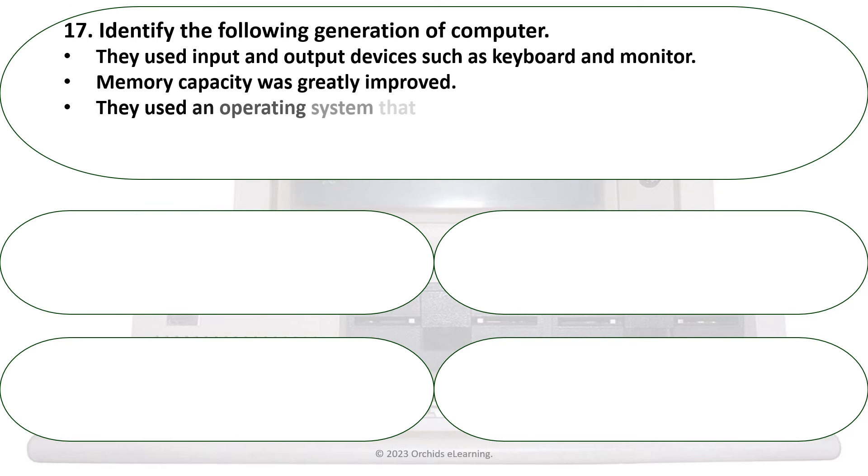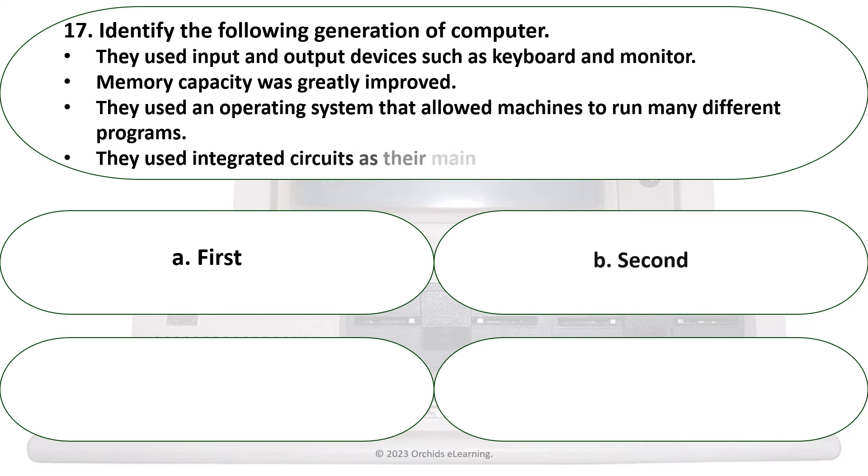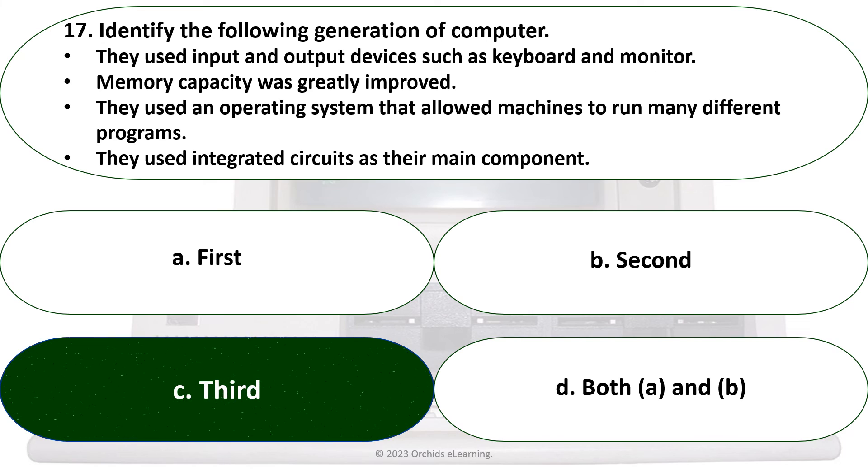They used input and output devices such as keyboards and monitors. Memory capacity was greatly improved. They used an operating system that allowed machines to run many different programs. They used integrated circuits as their main component. Each of the following statements hold: C. Third